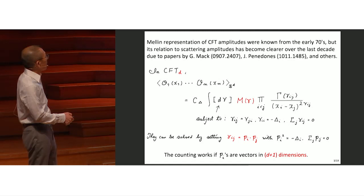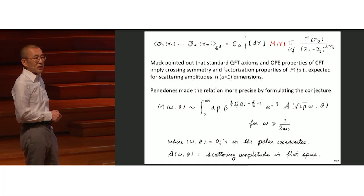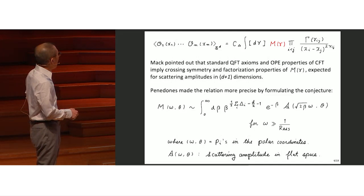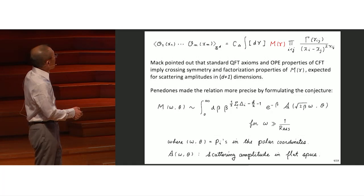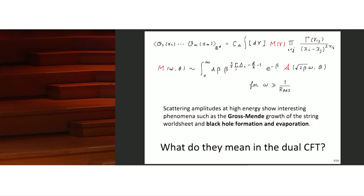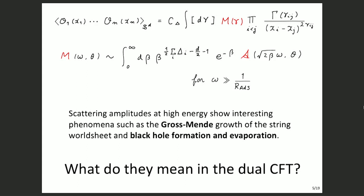If you have ADS-CFT correspondence, there is indeed a string theory in D plus one dimensional anti-de Sitter space — that's where D plus one comes from. Provided that you probe the energy region bigger than the ADS scale, you should have this relation. Here, omega and theta are polar coordinates for the set of momenta, where omega is the overall scale of the momentum.